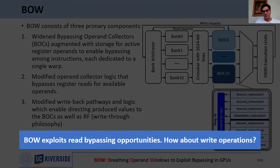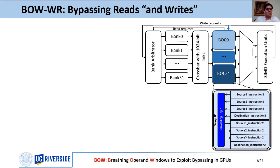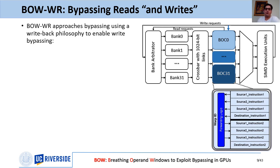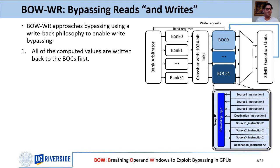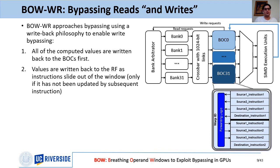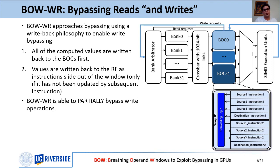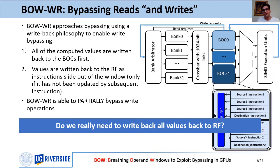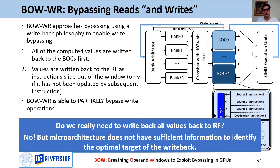However, this design can only bypass read operations. To enable write bypassing, we developed an enhanced design called BOWR, which uses a write-back philosophy instead of write-through. All computed values are written back to the BOCs first, then written to the register file as instructions slide out of the current window. Only writes updated by a subsequent instruction within the same window are bypassed, so BOWR can only partially bypass write operations. If a value is dead and not needed after being evicted from the BOC, we don't need to write it back. Unfortunately, microarchitecture alone does not have sufficient information to identify the optimal write-back target.